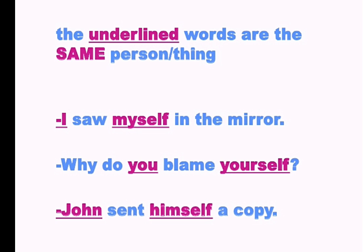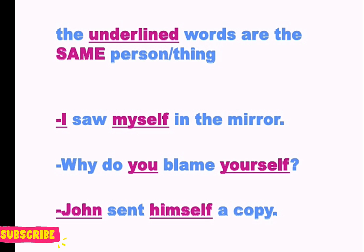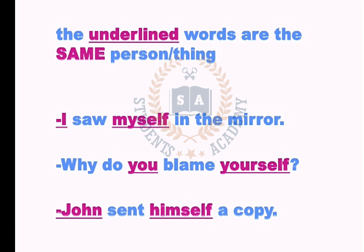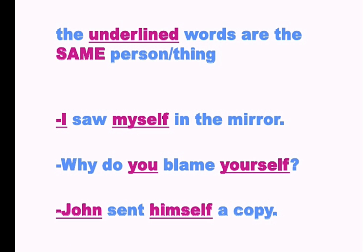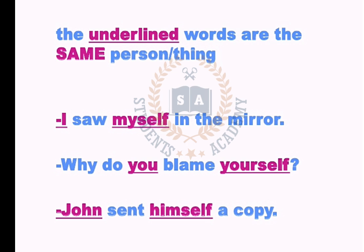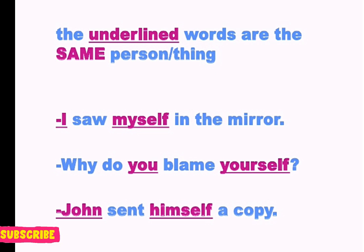Examples: 'I saw myself in the mirror' — اس میں 'I' subject ہے اور 'myself' reflexive pronoun ہے جو subject کی طرف واپس refer کر رہا ہے۔ 'Why do you blame yourself?' — 'you' subject ہے اور 'yourself' reflexive pronoun ہے۔ 'John sent himself a copy' — 'John' subject ہے اور 'himself' reflexive pronoun۔ اگر یہ جمع ہوتی تو 'himself' کی جگہ 'themselves' آتا، جیسے 'John, Ibrahim and Fatima sent their copies'۔